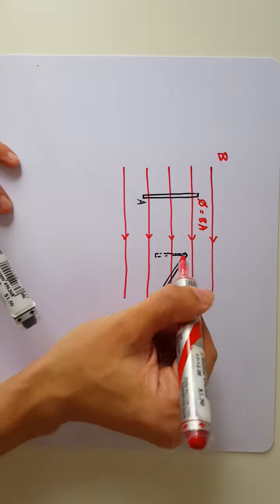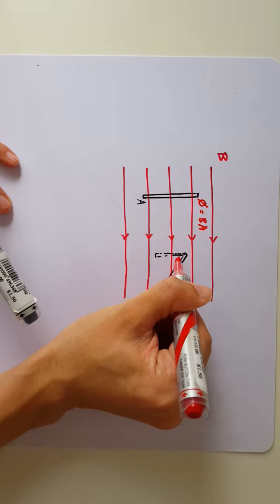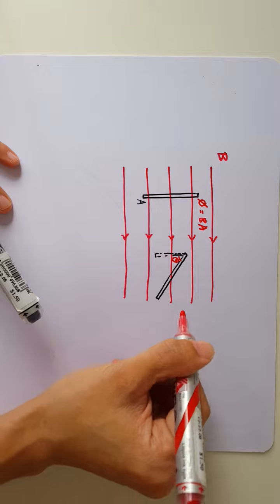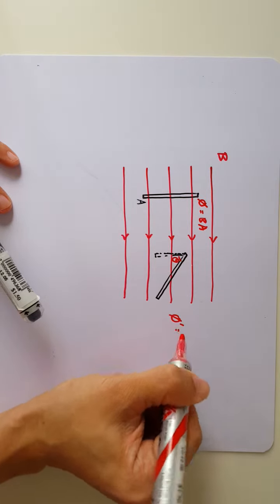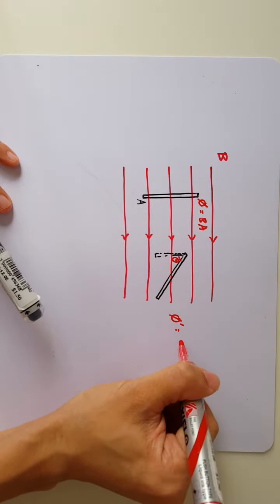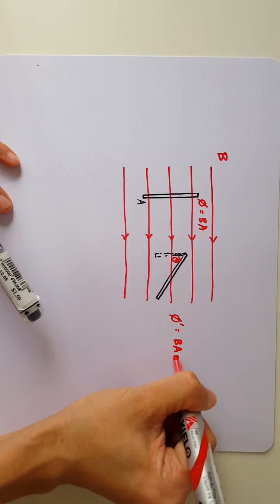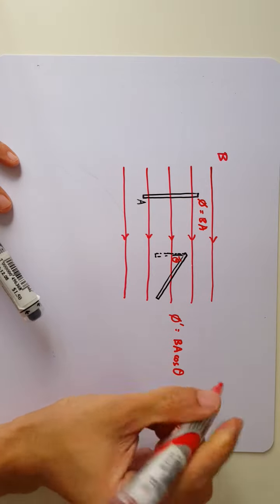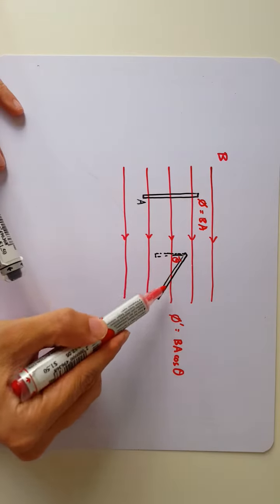So in fact, if this angle is theta, then the new flux that's captured by this coil would be B A cosine theta, because the effective area will not be A anymore.